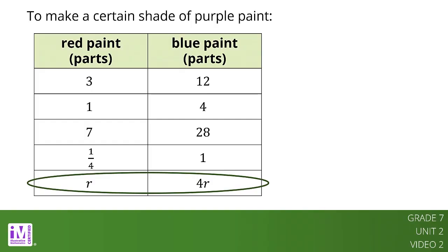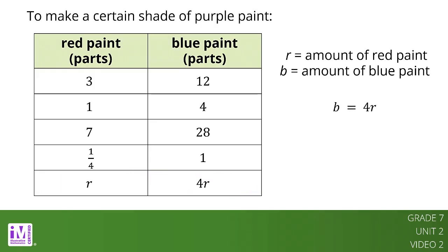The last row in the table says that if we know the amount of red paint needed, R, we can always multiply it by 4 to find the amount of blue paint needed to mix with it to make a Venusian sunset. We can say this more concisely with the equation B equals 4R. So the amount of blue paint is proportional to the amount of red paint and the constant of proportionality is 4.